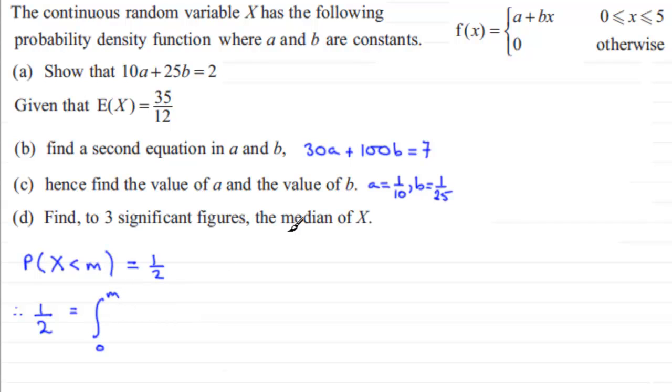So f(x) is a plus bx. So if we substitute this in here, we know what a is, it's 1/10. And then we've got plus bx and b was 1/25. So bx there. And we're integrating this with respect to x.